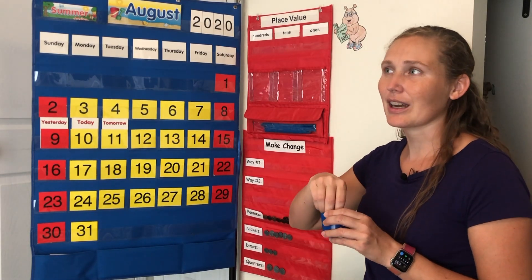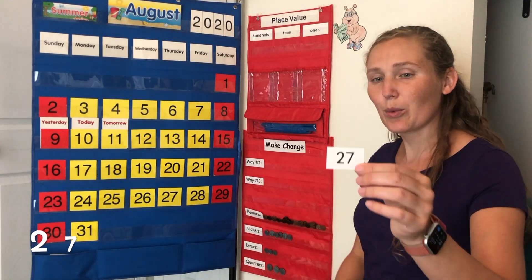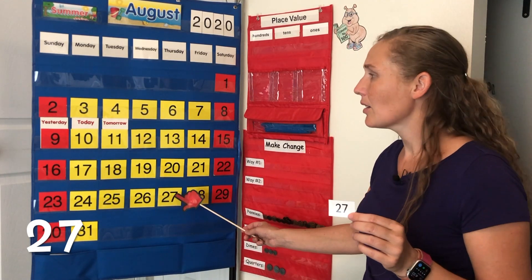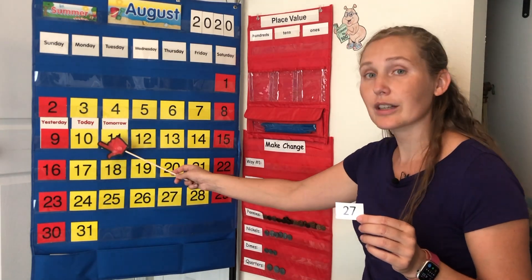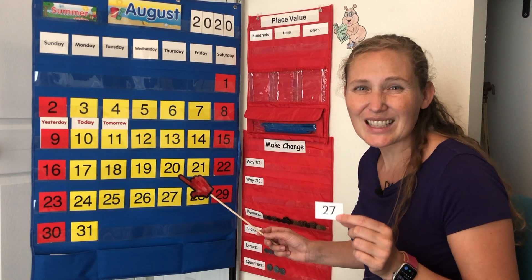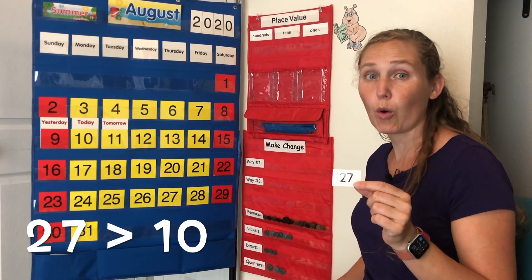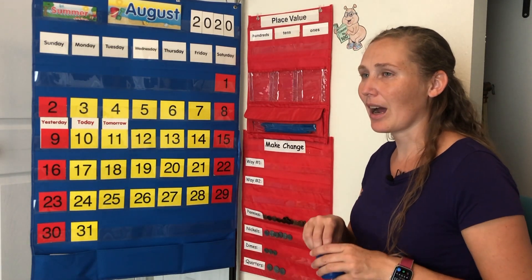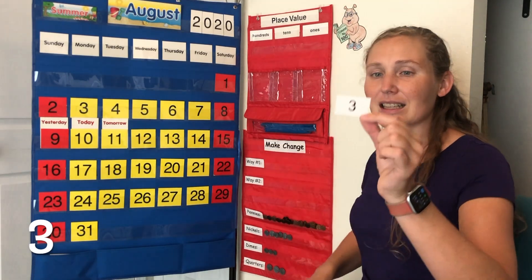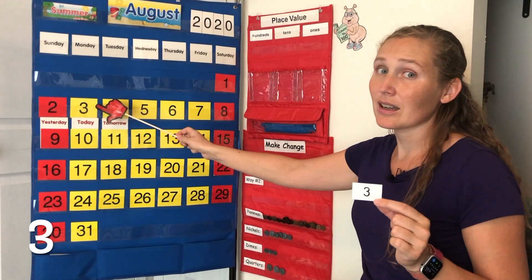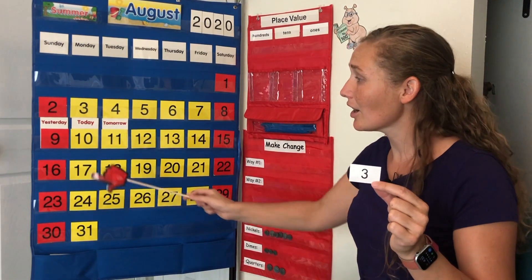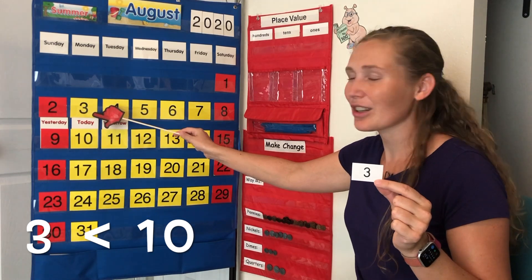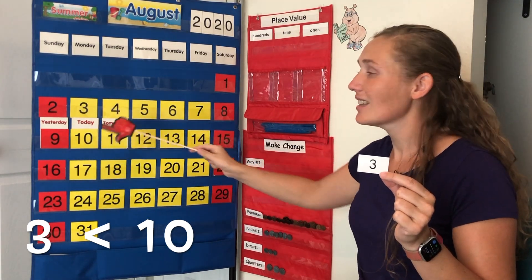Now, I'm going to pull a number out of our cup. It's the number 27. Is 27 bigger or smaller than our number 10? You're right. 27 is a bigger number, or greater than the number 10. Let's take another number out of our cup. This one is the number 3. Is 3 bigger or smaller than our number 10? You're right. 3 is smaller than, or less than, the number 10.